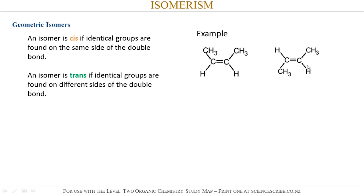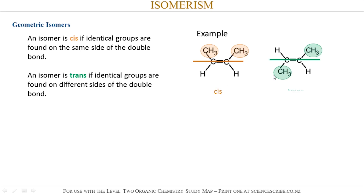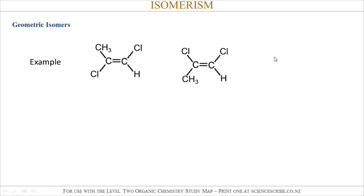To classify these two isomers, or to write down a name which would distinguish them from each other: if you have identical groups on the same side of the double bond, then it's cis. If you have the identical groups on opposite sides of the double bond, then it's trans.